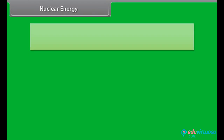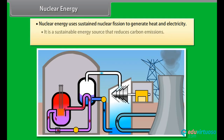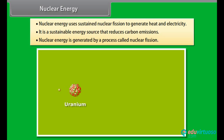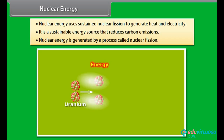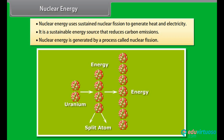Nuclear energy. Nuclear energy uses sustained nuclear fission to generate heat and electricity. It is a sustainable energy source that reduces carbon emissions. Nuclear energy is generated by a process called nuclear fission, in which the nucleus of heavy uranium, plutonium, or thorium is bombarded with low energy neutrons. The atom is then split into lighter nuclei, releasing a tremendous amount of energy. For example, the fission of one atom of uranium produces 10 million times the energy produced by the combustion of an atom of carbon from coal.